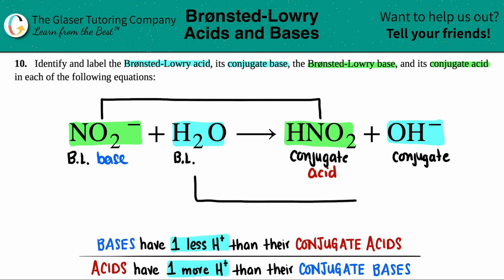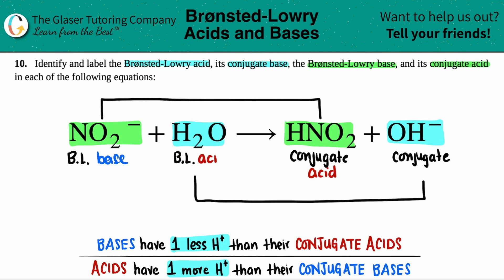Now I'll do the same thing with the other pair: H2O and OH minus. H2O has two hydrogens; OH minus has only one hydrogen. The acid always has one more, so H2O has to be the Bronsted-Lowry acid, and because of that, OH minus is the conjugate base. And we're done — pretty simple!